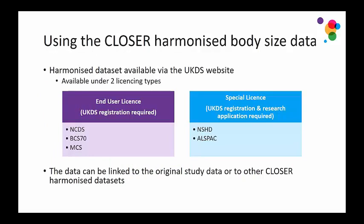The data are made available under two licensing types. End User Licence data just requires you to register on the UK Data Service. Special Licence access requires you to submit an application via UKDS explaining your research project. The data include CLOSER IDs that enable you to link with other harmonized datasets CLOSER has produced. Updated versions are also available under End User Licence and include the original study identifiers, so you can link back to original study data.